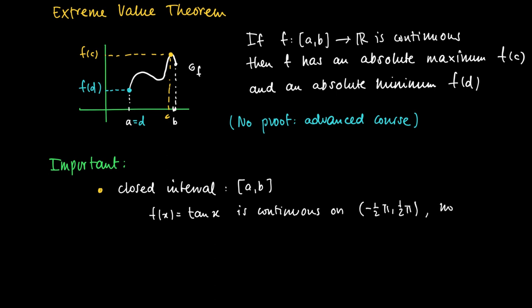But we also know that if we take the limit from above to -π/2 that the function goes to -∞. And the same holds if we approach π/2 from the left, then the tangent of x goes to ∞. So we have no maximum nor do we have a minimum.